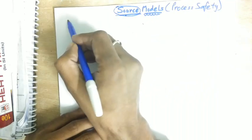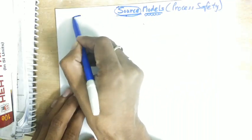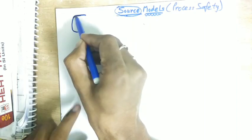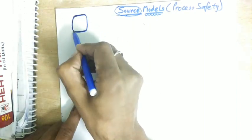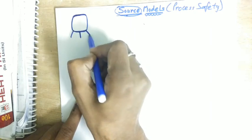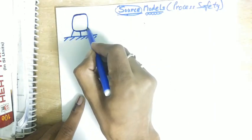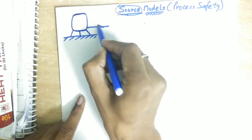We will talk about these sources. The main sources are - let us consider a vessel put on a stand, and this is ground.